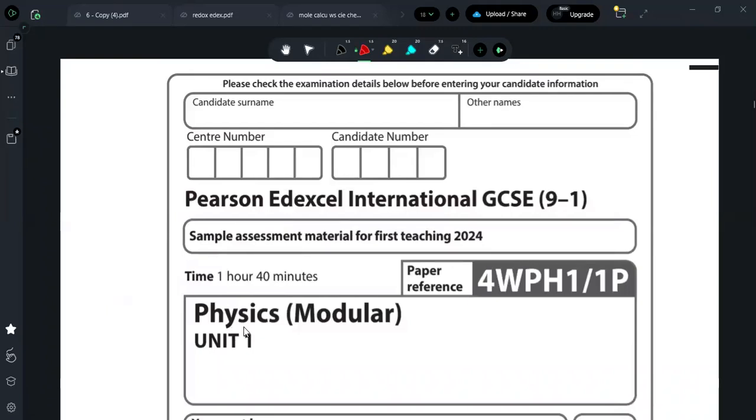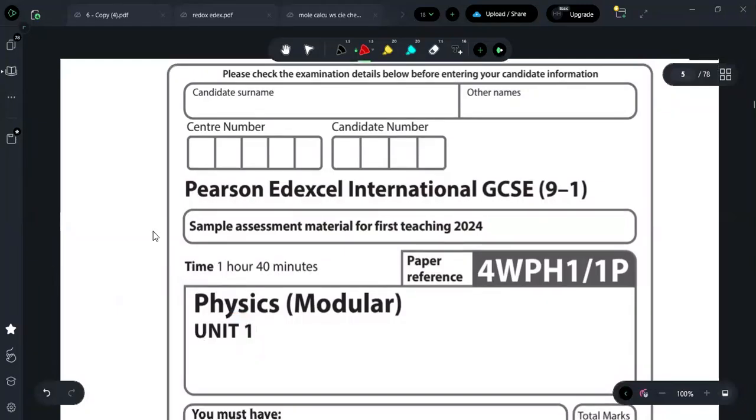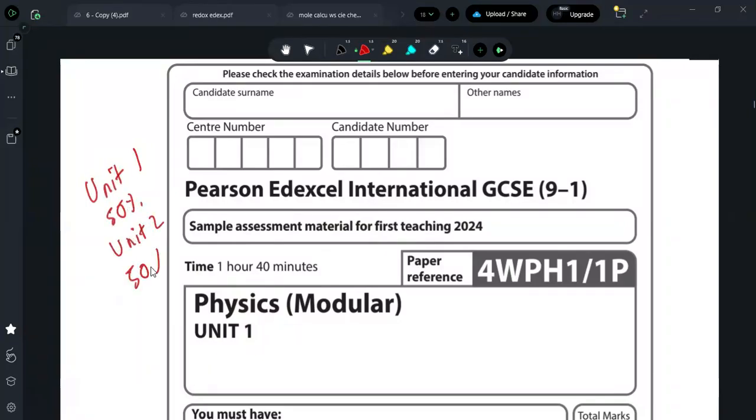But now, we will not have any paper 1 and paper 2. We will now call them unit 1 and unit 2, and we have the specifications in the topics. Unit 1 is 50% and the rest 50% will be in unit 2. So it's a complete pattern.